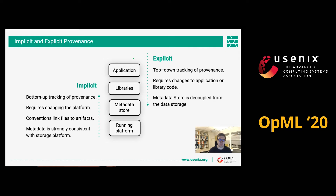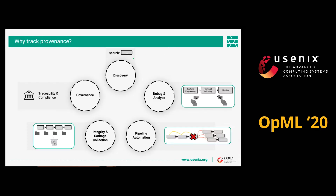We will try to help the platform by following certain conventions in our work. Before we continue, we would ask: why do we track provenance? In order to be compliant with GDPR, for example — so for governance reasons.